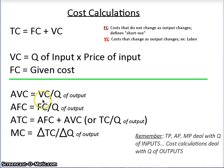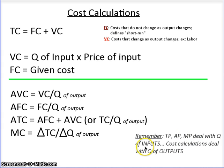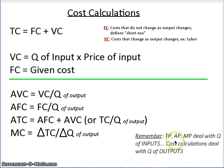Average variable cost equals variable cost over quantity of output. This is a cost assessment, not a productivity assessment. Remember: total product, average product, and marginal product deal with quantity of inputs. Cost calculations deal with quantity of outputs. So whenever you see VC over Q, FC over Q, TC over Q, the Q in cost analysis refers to the quantity of outputs. Got to keep that straight.